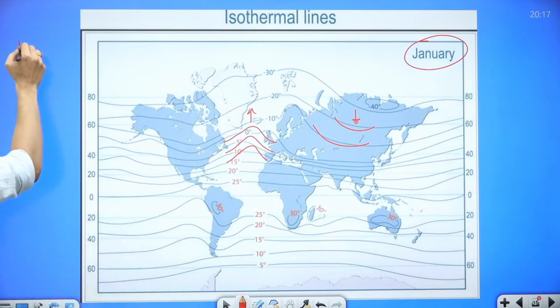Now what are isotherms? Isotherms are lines joining the places of same temperature. The term is related to temperature—lines joining places of same temperature.